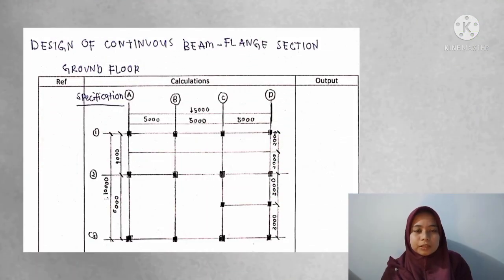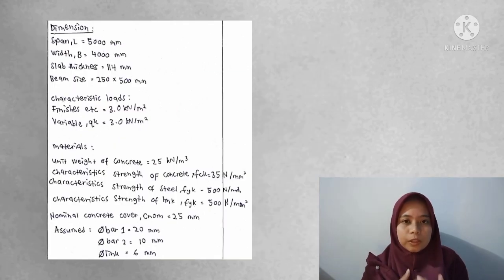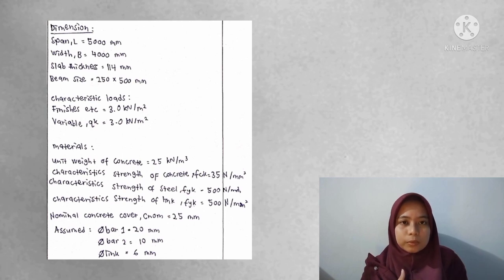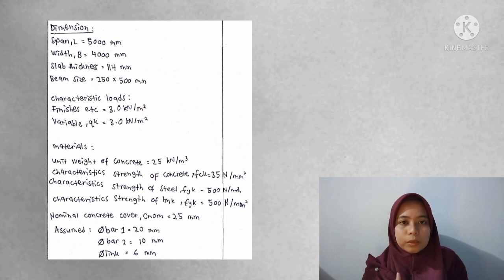My name is Nur Asikin Binti Awang Tujang. I will present the design of continuous beam. The cross-section for the beam: for dimensions, slab thickness is 114 mm and beam size is 250 × 500 mm.